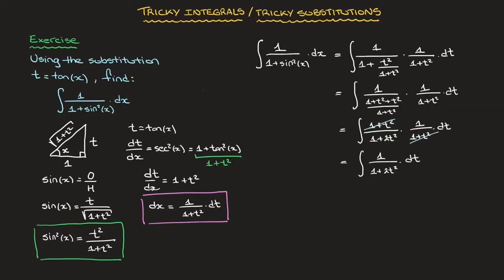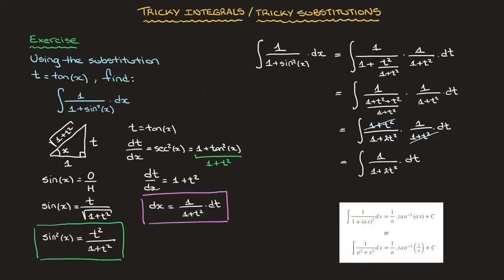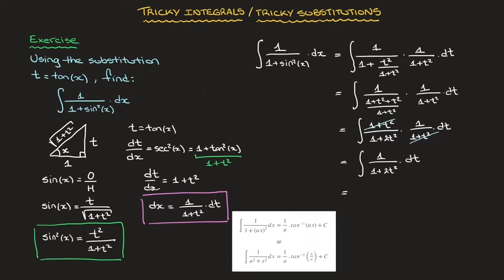At this stage, we can recognize we're dealing with one of our standard integrals — specifically the arctan form. Using the standard formula, this equals 1 over √2 times arctan of √2 · t, plus a constant of integration.